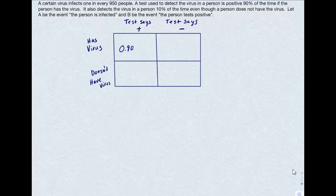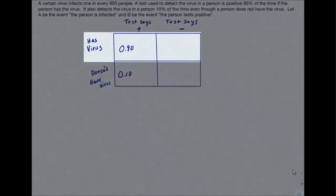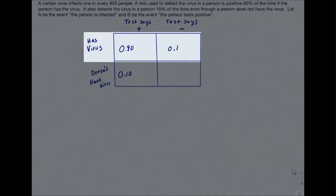So from the problem information, I know that if a person has the virus, 90% of the time the test will say that that person does in fact have the virus. If the person doesn't have a virus, 10% of the time the test is still going to say the person has the virus. Since probabilities have to add to 1, since the test is going to say 90% of the time that the person with the virus has the virus, 10% of the time the test will say they do not.